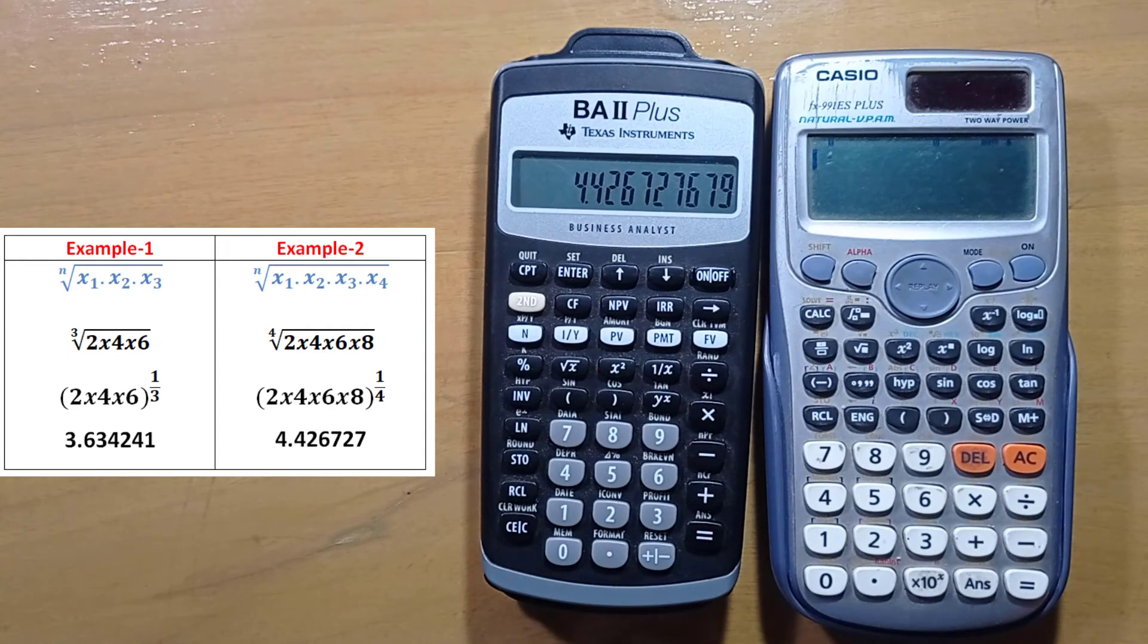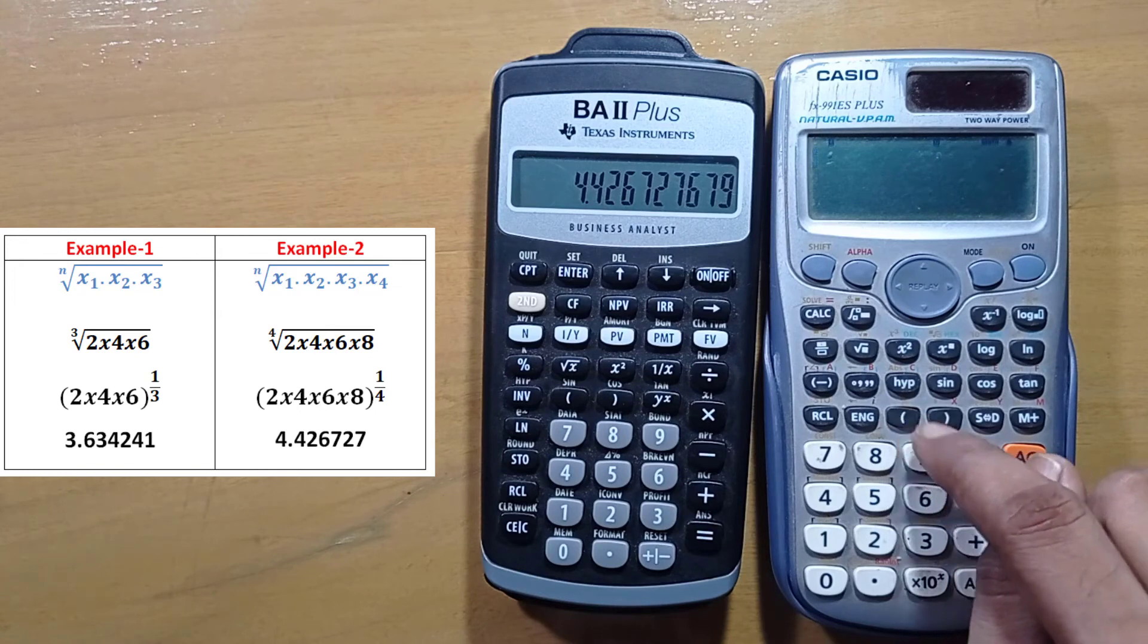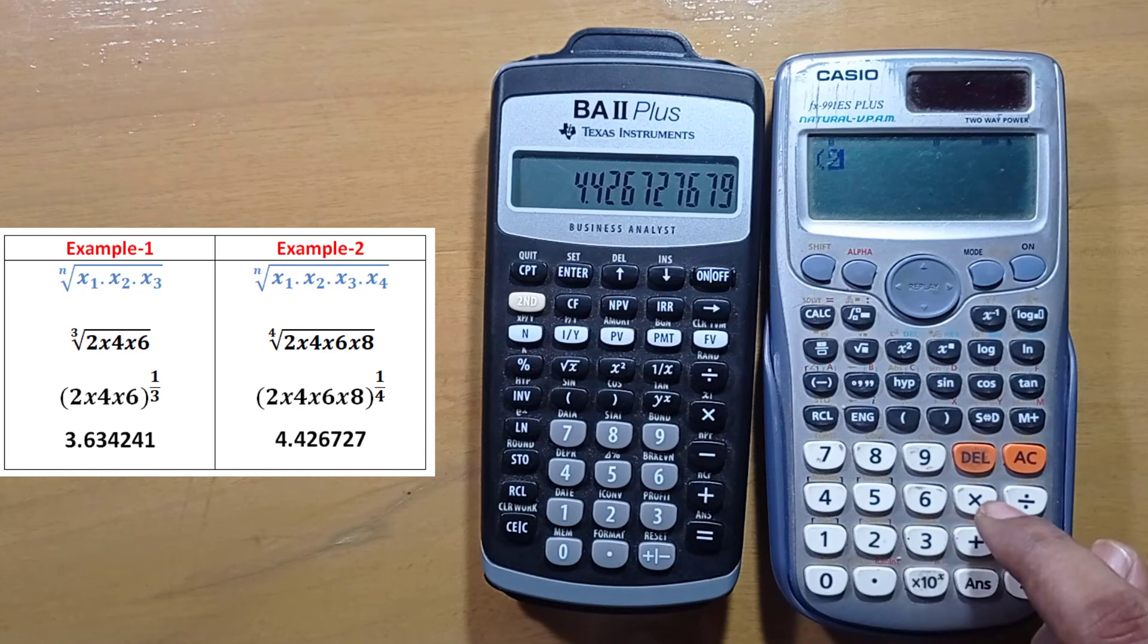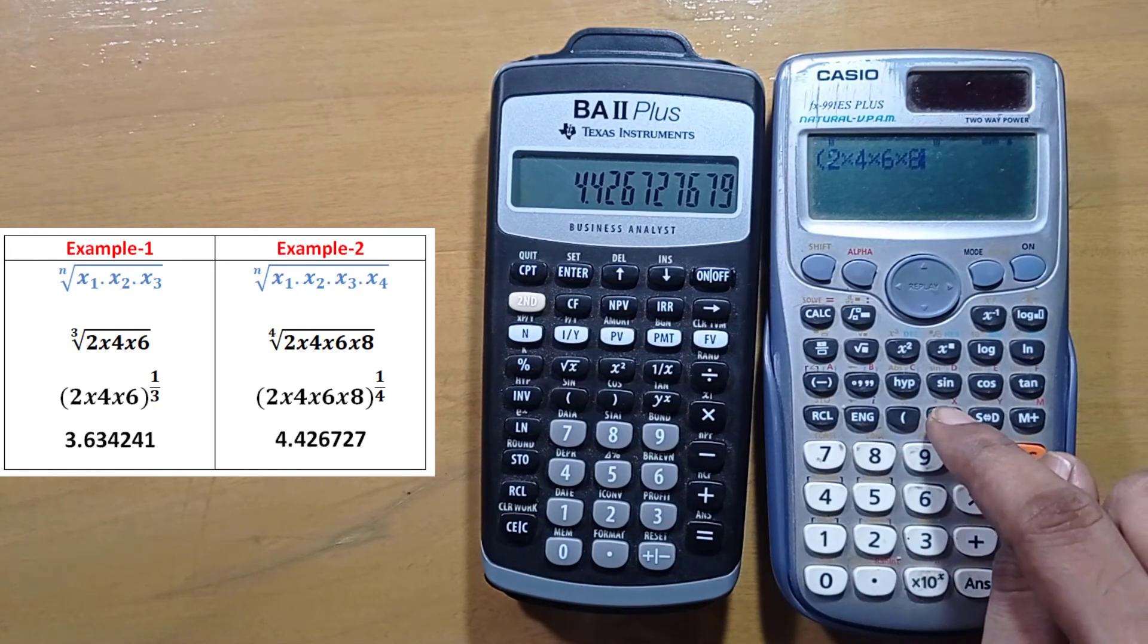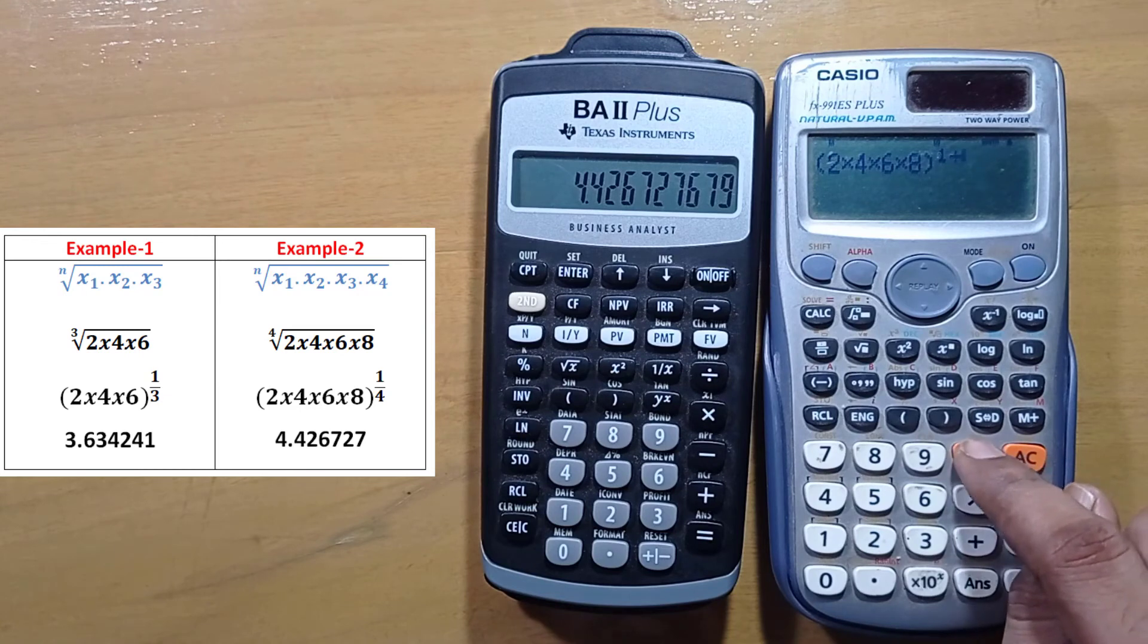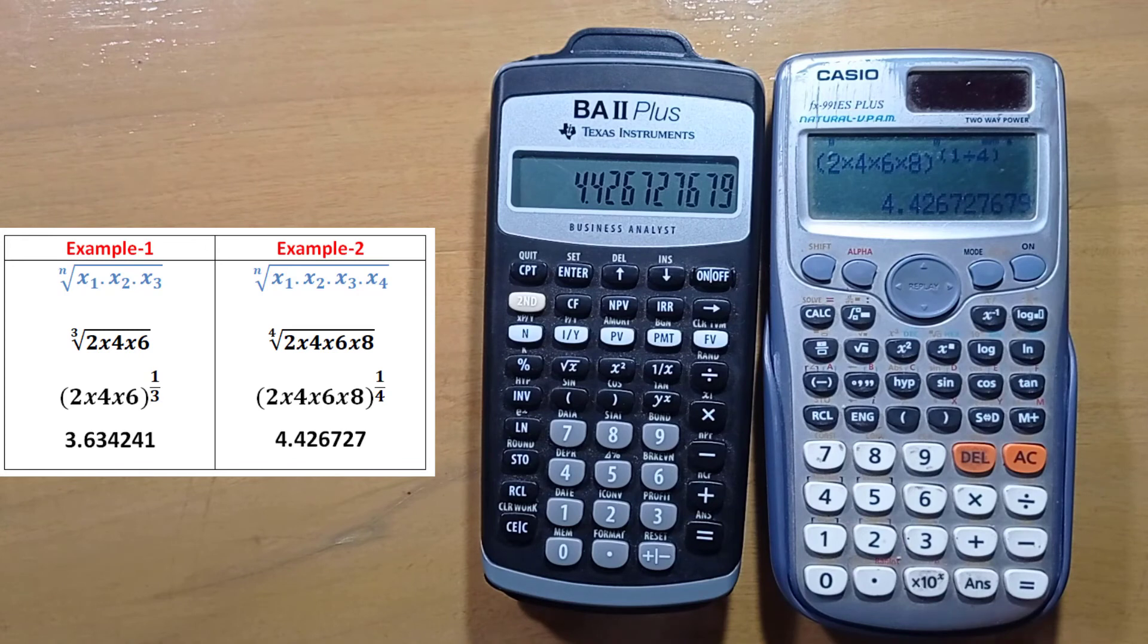We have the same result. Or if you have more than 3 variables then you can't use this button. You have to do it in a different way. Like press first bracket, 2 into 4 into 6 into 8, then close the bracket. Press this button and 1 divided by 4. So we have the same result. So it is relatively easy in scientific calculator to calculate geometric mean.